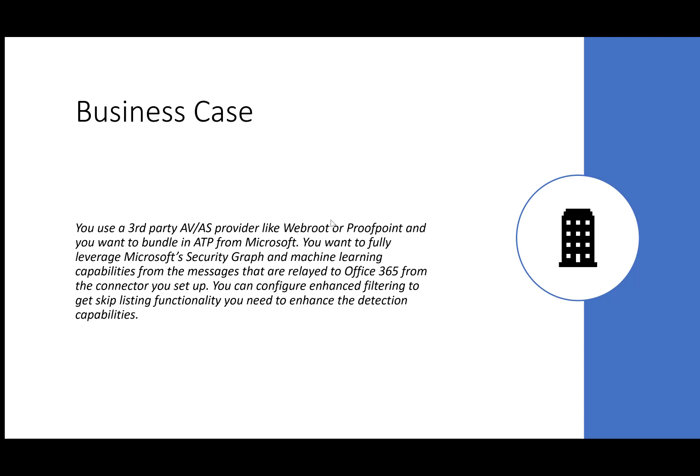For the business case here: you have an MSP using AVs with WebRoot or Proofpoint. You want to bundle on ATP to leverage the entire stack of services it offers, and a big part of that is the machine learning capabilities. You set up advanced filtering to get the skip listing functionality you need to have better reporting and better detect these threats.